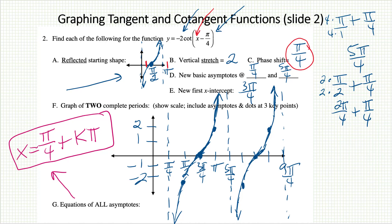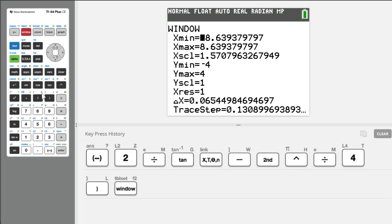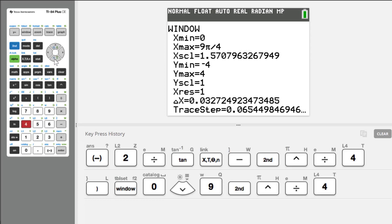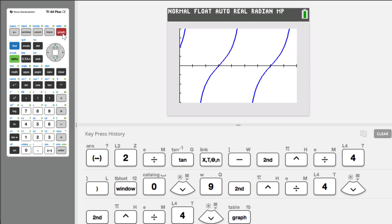As always, we can check these problems on the graphing calculator. I'll have to type this in negative 2 and then divided by tangent of the parentheses. And then I'll try to match the window we had on the paper. We went from about 0 to 9 pi over 4, and we were counting by pi over 4. And then on the y-axis, I think what this says looks good. Negative 4 to 4, counting by 1. That seems about right. And I'll hit graph. And of course, the asymptotes are missing. But everything else looks just like we had it on the paper. Here's that first asymptote at pi over 4. Here's that first x-intercept at 3 pi over 4. Here's the next asymptote. And so on.